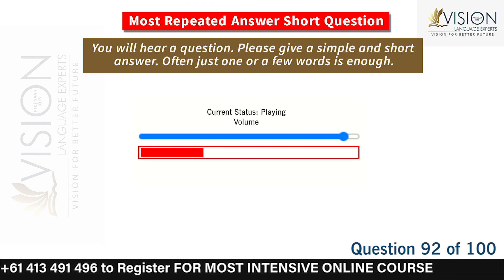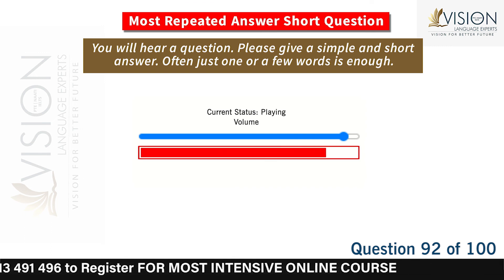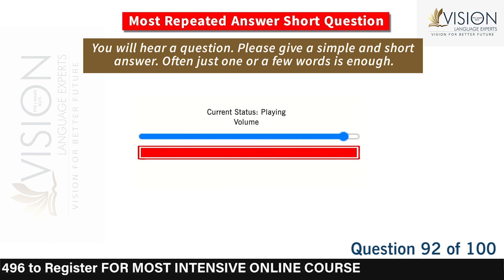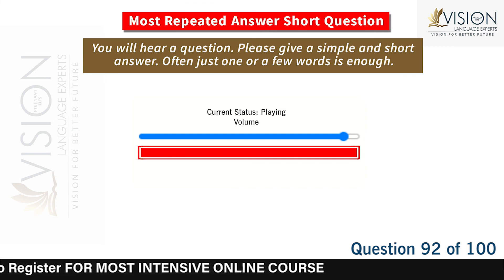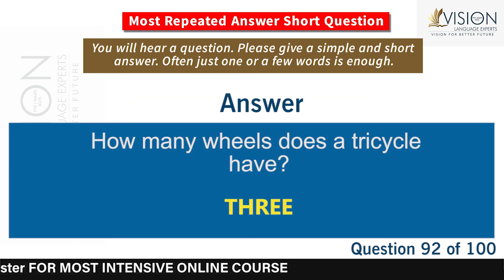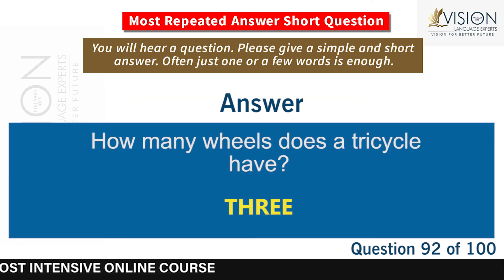How many wheels does a tricycle have? Three.